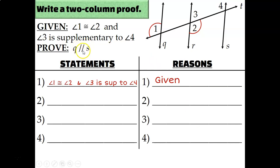What am I trying to prove? I'm trying to show that Q is parallel to S. Remember from our previous lesson that in order to show that two lines are parallel, you must either prove that you have corresponding, alternate interior, or alternate exterior angles that are congruent, or that you have consecutive interior angles that are supplementary.